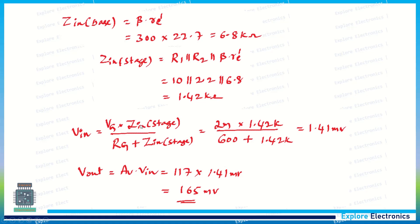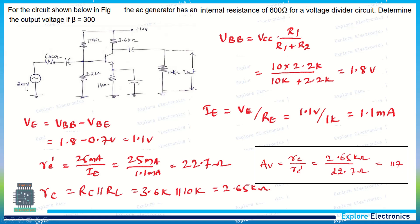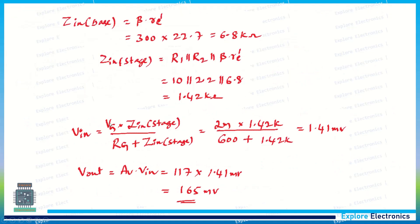You can see beta is 300, so we get 1.42 kilo-ohms as Zin(stage). Then we know that the input gate voltage is given as 2 millivolts.